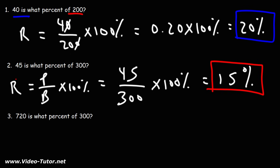Something to keep in mind: whenever the part is less than the base, the percentage will be less than 100. For the third example, notice that the part is greater than the base, so we should get a number greater than 100 percent. Number three: 720 is what percent of 300? Since 300 is 100% of 300, and 720 is more than 300, the percentage should be more than 100 percent.